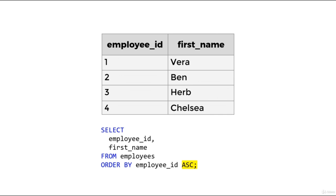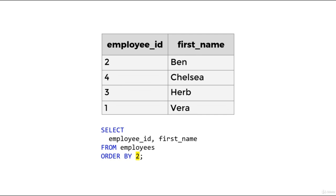We can include the ASC keyword explicitly — ORDER BY employee_id ASC — which returns the same result as the default. If we want to return rows in descending order, we write DESC instead. So now we have employees ordered by employee_id in descending order, with the employee with the largest value — Chelsea, with employee_id 4 — returned in the first row. We can also order by the position of a column in the SELECT clause — for example, ORDER BY 2 means ordering by the second column specified.